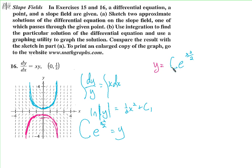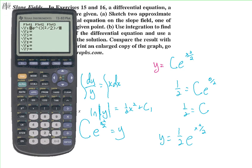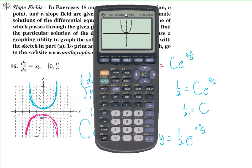We don't know C, but we know when x equals 0, y equals one-half. Plugging in: one-half equals C·e^(0/2) equals C·e^0 equals C·1 equals C. So C equals one-half. Our particular solution is y equals one-half·e^(x²/2). Graphing this on a calculator — y equals e^(x²/2) divided by 2 — the graph looks just like what we drew on the slope field.